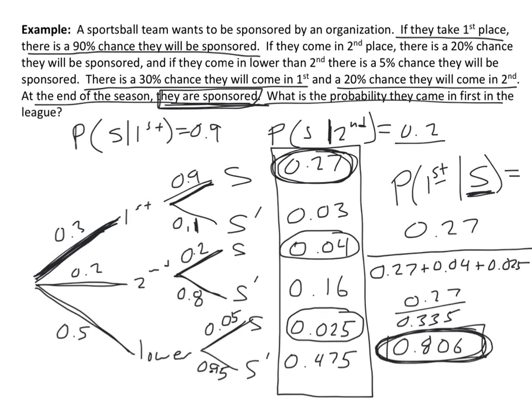Keep in mind the chances of them being in first place were only 30%, but if we find out they were sponsored, there's a really good chance it's because they came in first. That's what Bayes' Theorem is finding. In theory, there could be four, five, six, or fifteen different events in the first branch — you won't really see that on the IB exam, but in real-world application there are definitely cases with lots of different potential causes. Bayes' Theorem has the potential to be really useful in your IAs, if probability is something you enjoy.